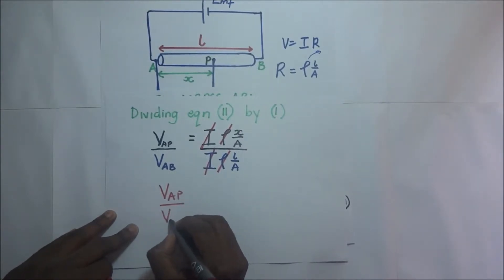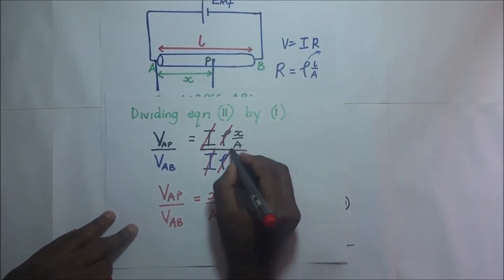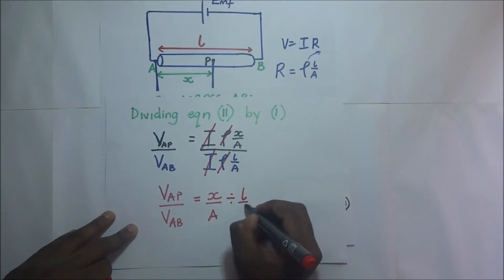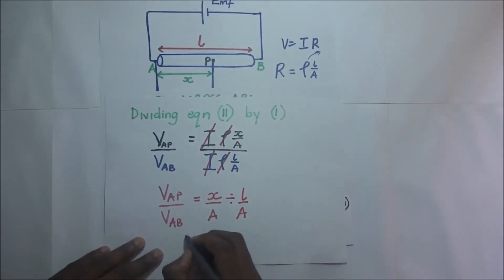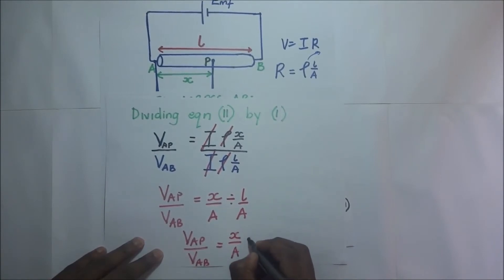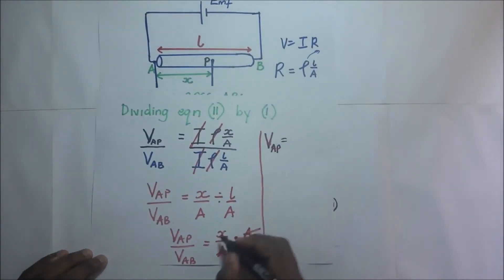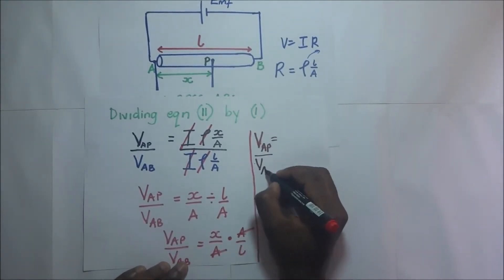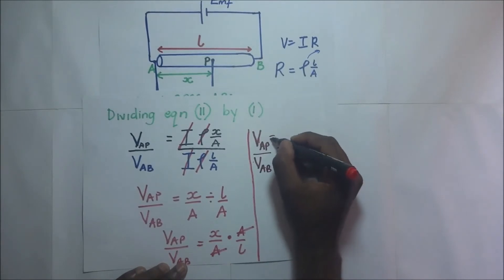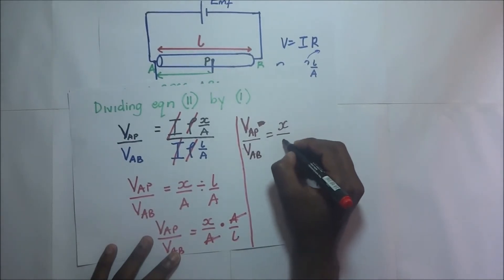We are then left with V_AP over V_AB equal to X/A divided by L/A. Of course, this ends up being V_AP over V_AB equal to X/A times the reciprocal, A/L. This A and that A cancel, giving us V_AP over V_AB is equal to X over L.